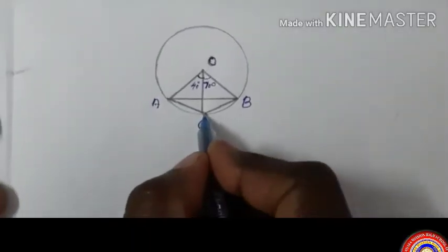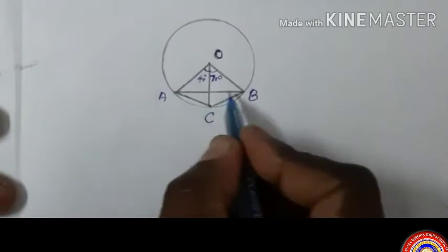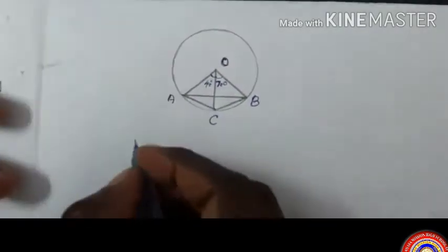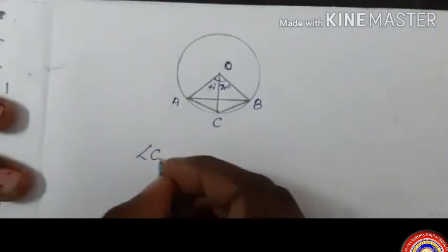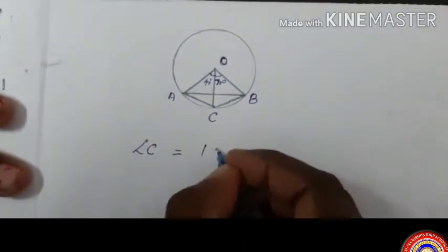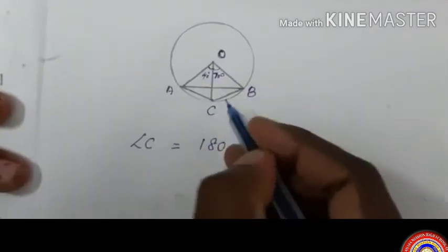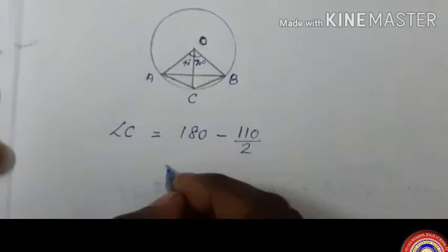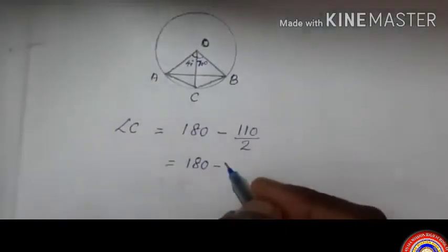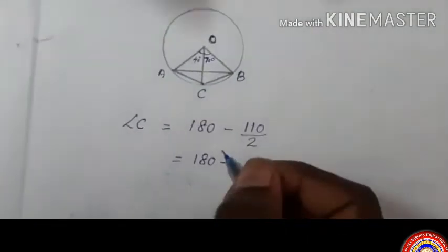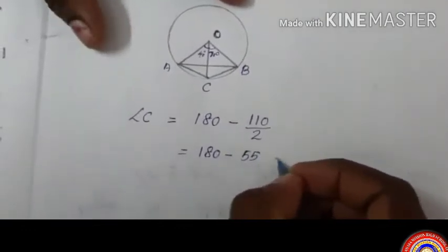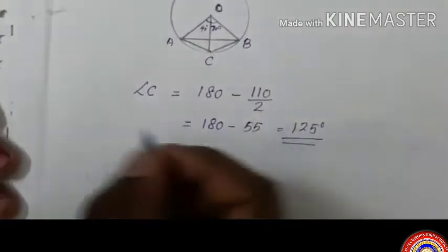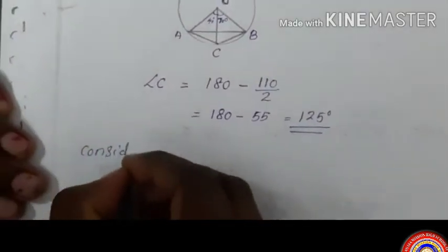In the second question, we have to find all the angles of triangle ABC and triangle OBC. From the figure, angle C equals 180 minus half of the central angle. The central angle is 110 degrees, so 110/2 equals 55, and angle C equals 180 minus 55 equals 125 degrees.